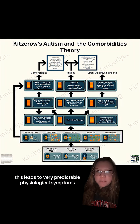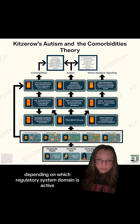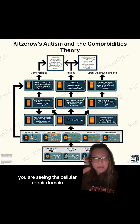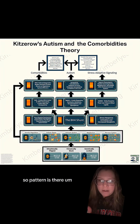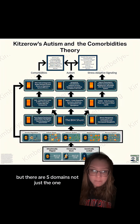This leads to very predictable physiological symptoms depending on which regulatory system domain is active. In this case, you are seeing the cellular repair domain. The pattern is there, but there are five domains, not just the one.